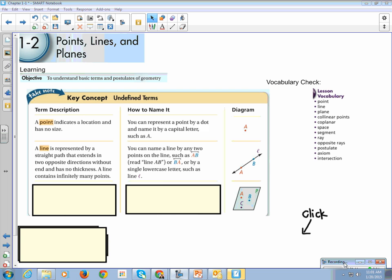You can name a line by any two points on that line. So for example, AB is going to have a line over the top and two arrows going in each direction. That tells me we're a line versus a line segment. The same line would be represented by BA or, like in this case, this line is the cursive letter L.